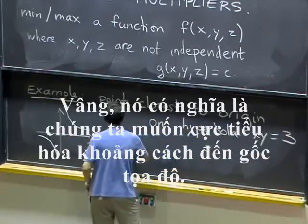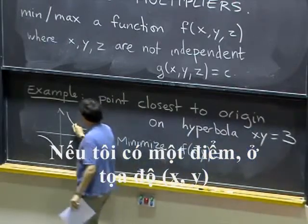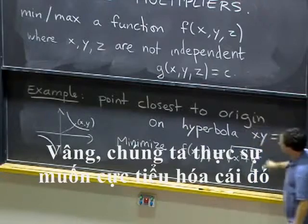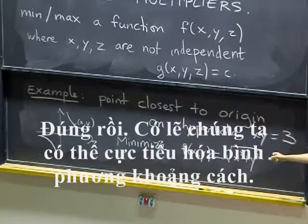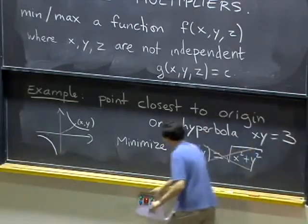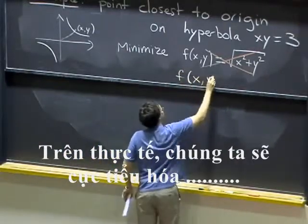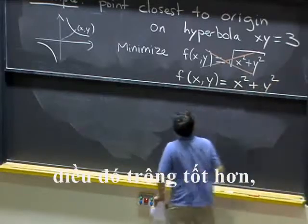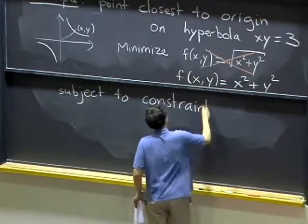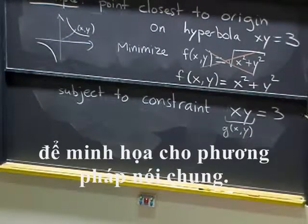What does it mean? We want to minimize distance to the origin. What's the distance to the origin? If I have a point at coordinates (x,y), then the distance to the origin is square root of x squared plus y squared. Do we really want to minimize that, or can we minimize something easier? Maybe we can minimize the square of the distance. So actually, we'll minimize f(x,y) equals x squared plus y squared. That looks better. We can do this anywhere, subject to the constraint xy equals 3. And we'll call this thing g(x,y) to illustrate the general method.